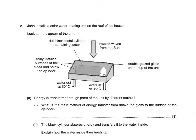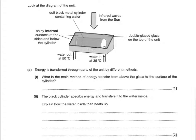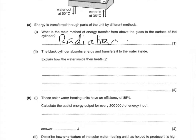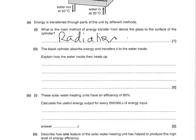John installs a solar water heating unit on the roof of his house. Energy is transferred through parts of the unit by different methods. What is the main method of energy transfer from above the glass to the surface of the cylinder? That is radiation — you have three choices: conduction, convection, or radiation. The black cylinder absorbs energy and transfers it to the water inside — explain how the water inside heats up. First talk about convection, then say the water expands or the density falls, meaning warm water rises because of convection.